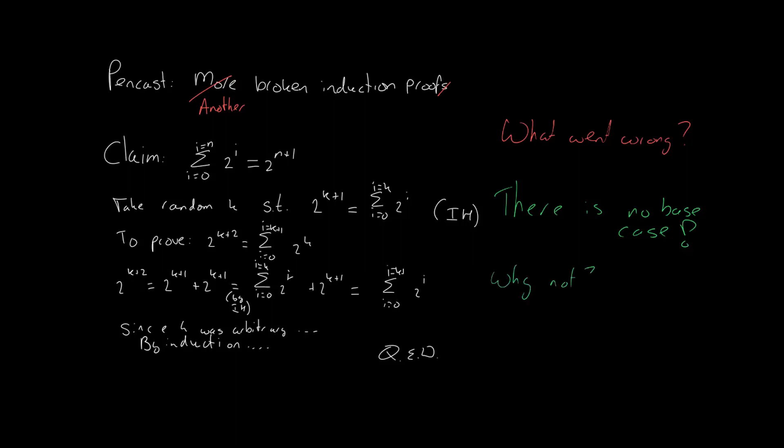So, for all numbers larger than zero, for instance. The problem is that there is no single number, no base case, for which this is true. Because there is no number for which this thing is true, and so we cannot start our dominoes. We cannot start our induction chain.